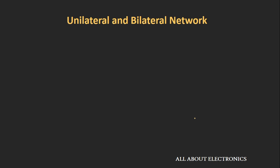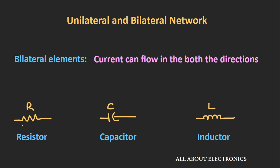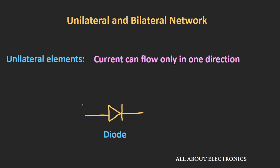The second kind of network is the unilateral and the bilateral network. In bilateral elements, the current can flow in both directions — examples are the resistor, capacitor, and inductor, with no restriction on the direction of current flow. In unilateral elements, the current can flow only in one direction; the example is the diode. A network containing unilateral elements is called a unilateral network — the rectifier circuit is an example — while a network with resistor, capacitor, and inductor is called a bilateral network.